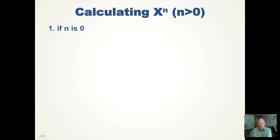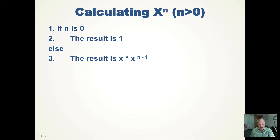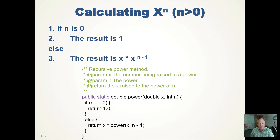How do we do some other recursive algorithms? If we want to calculate x to the n where n is greater than zero: if n is zero, the answer is one; else the answer is x times x raised to the n minus one. So we're calculating the power of the smaller problem. Eventually n will be zero, we return one, and we pop all the activation records off the stack. In Java, the method double power takes a double x and the n power. If n is zero, return one; else return x times power of x raised to n minus one.